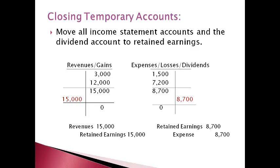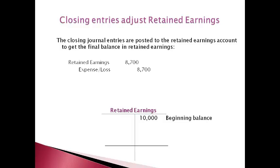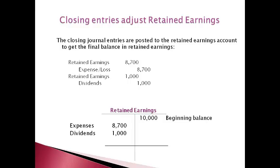The amounts are moved out of the income statement accounts and into retained earnings. Gains and losses are also income statement accounts that must be closed out with a balance of zero at the end of the period. The closing journal entries are posted to the retained earnings account to get the final balance in retained earnings. Expenses and losses are moved with a debit to retained earnings, and dividends are moved with a debit to retained earnings. Revenues and gains are moved with a credit to retained earnings.